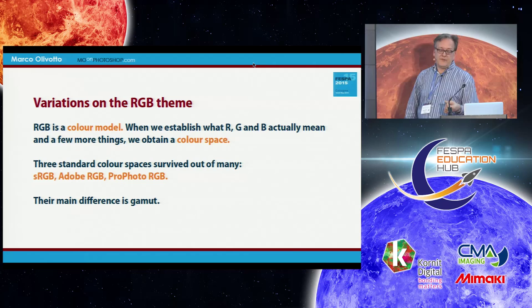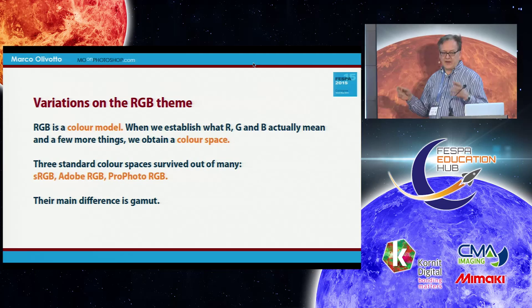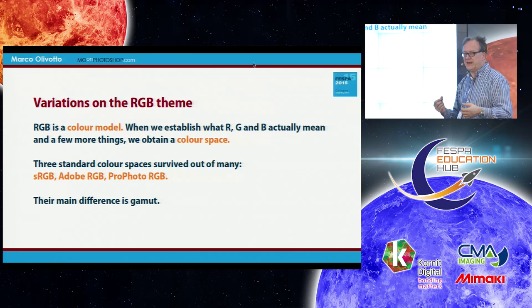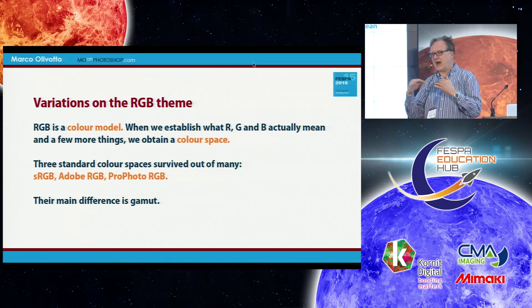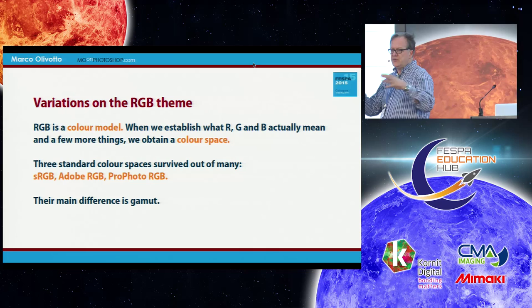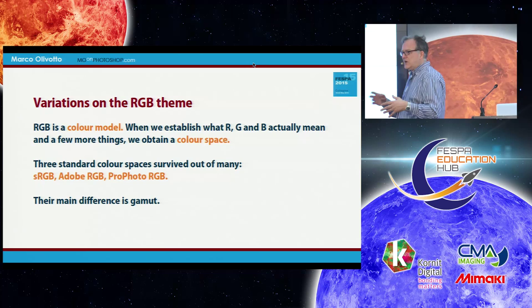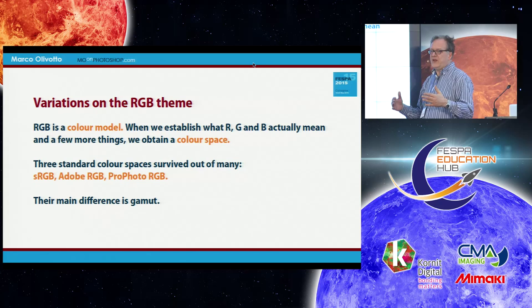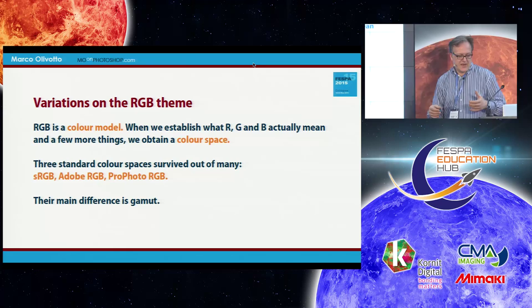RGB is a color model, and when we specify which colors make up the red, green, and blue components, we obtain a color space. We also need a white point and gamma — how tonal values are distributed. There was a huge proliferation of different RGB color spaces, but in the end only three survived in reality: sRGB, Adobe RGB, and Profoto RGB. The main difference is gamut.